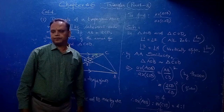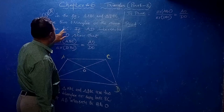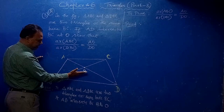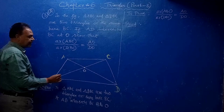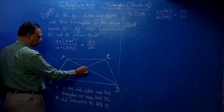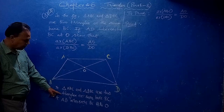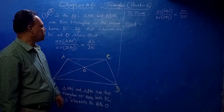Next, a very important problem. In the figure, Triangle ABC and Triangle DBC are two triangles on the same base BC. AD intersects BC at O. Then prove that area of Triangle ABC by area of Triangle DBC equals AO by DO.